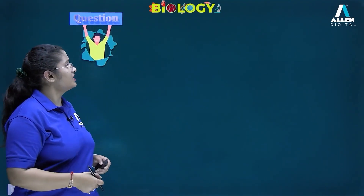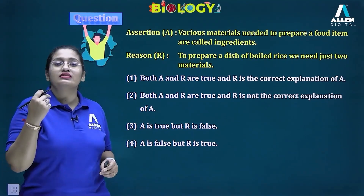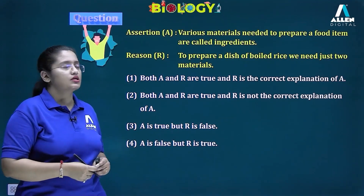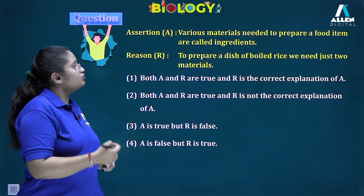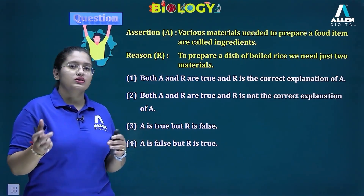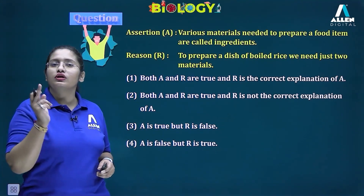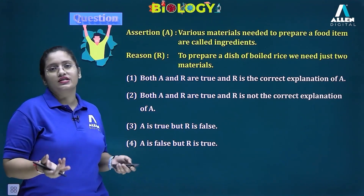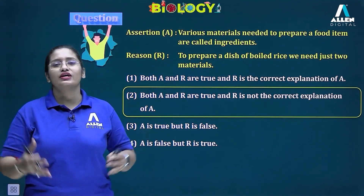The next question has an assertion and a reason. The assertion states that various materials needed to prepare a food item are called ingredients — which is correct. The reason states that to prepare boiled rice we need just two materials — which is also correct, as we need only water and rice. However, the reason does not explain the assertion, so the answer is option two: both A and R are true but R is not the correct explanation of A.